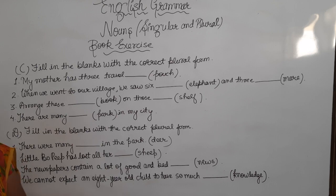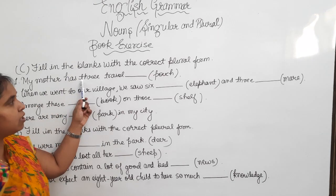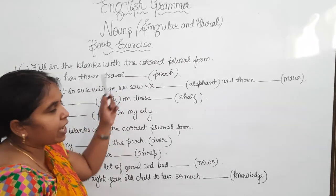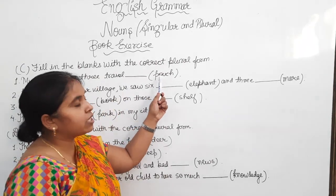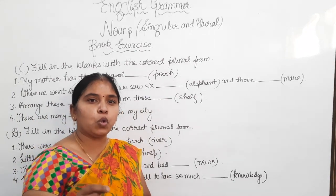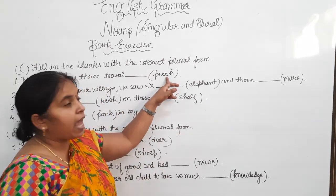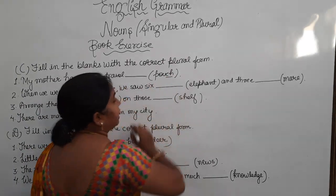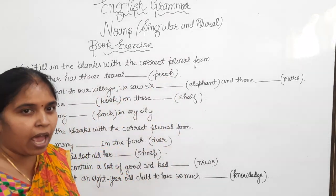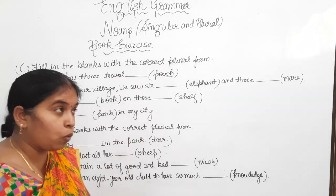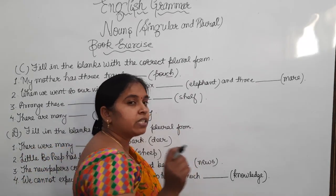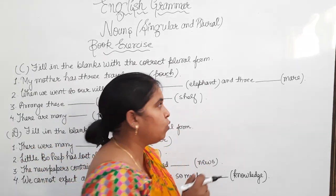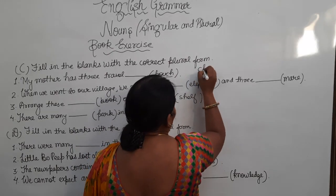The first sentence is, my mother has three travel dash. Now, in the bracket, the noun is pouch. P-O-U-C-H. And if you look at the word, the last letters are C-H. And as per the rule, when the last letters of singular noun are C-H, double S, S-H,